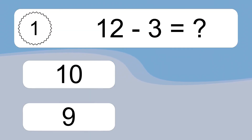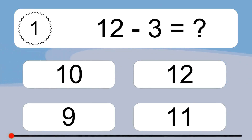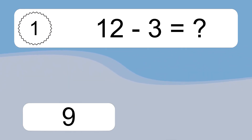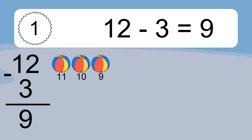12 minus 3 equals what? 12 minus 3 equals 9. Let's count it: 11, 10, 9.